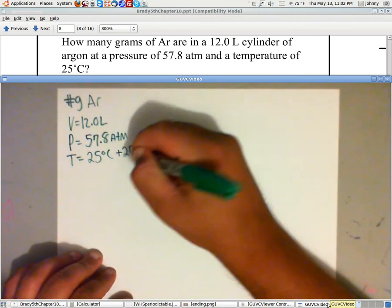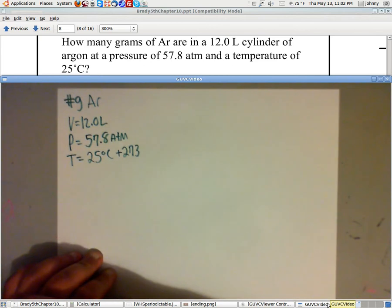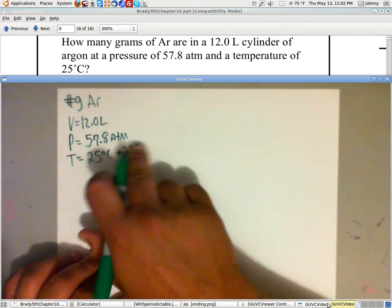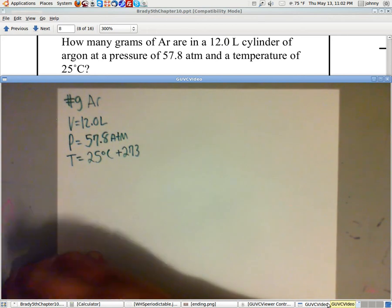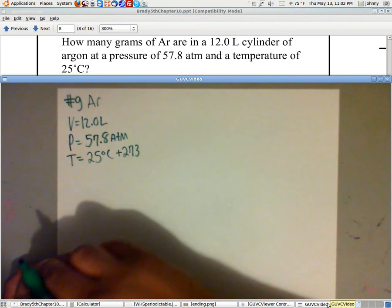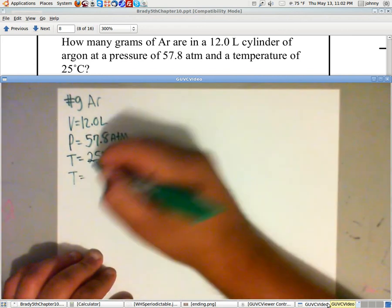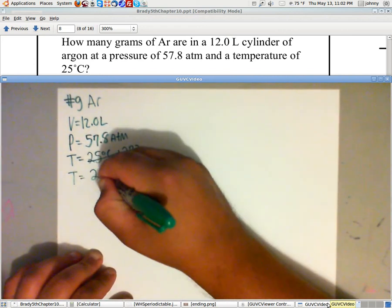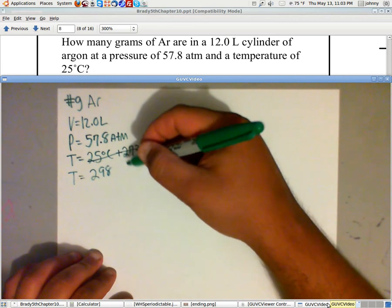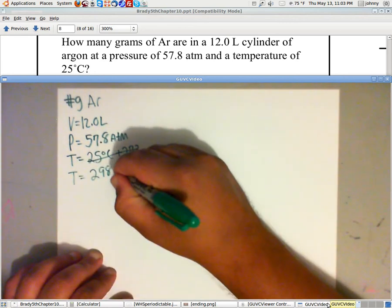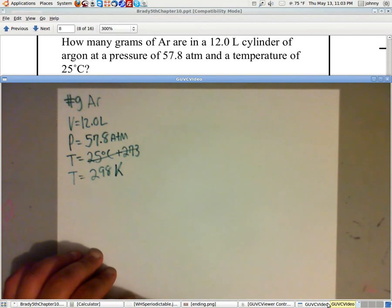Remember, we need this in Kelvin. So we need to add 273 to it. Now I know a lot of you are already screaming it's supposed to be 273.15. Well, once you add these two together by sig fig rules, you're only going to keep the whole numbers. Anyway, this actually for our temperature then is T equals 298. Kelvin doesn't need a degree sign. It just needs the letter K.